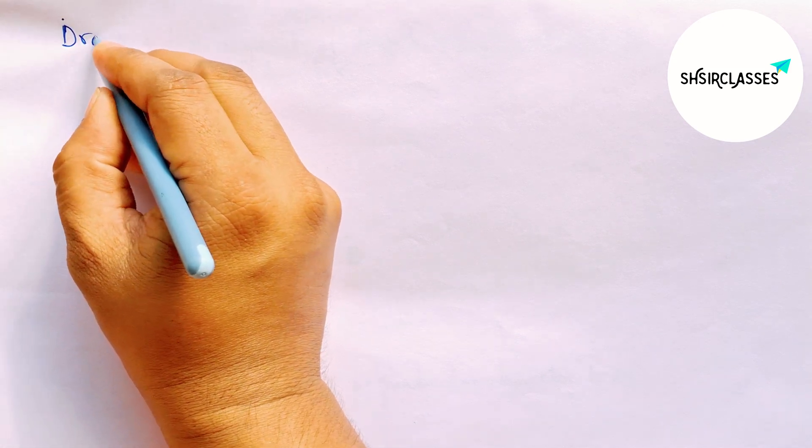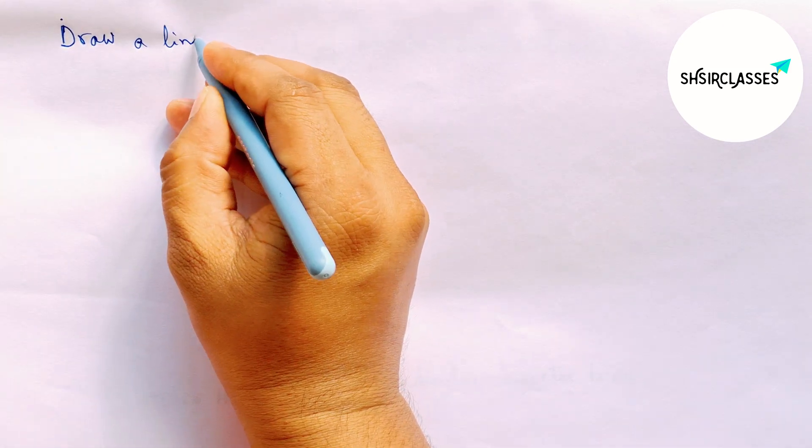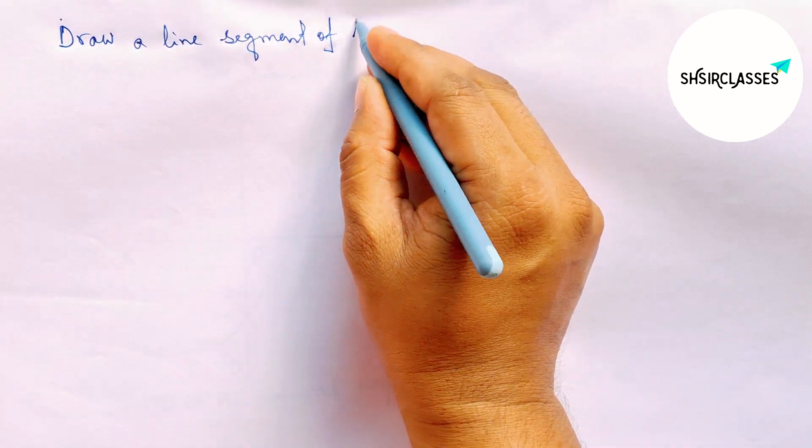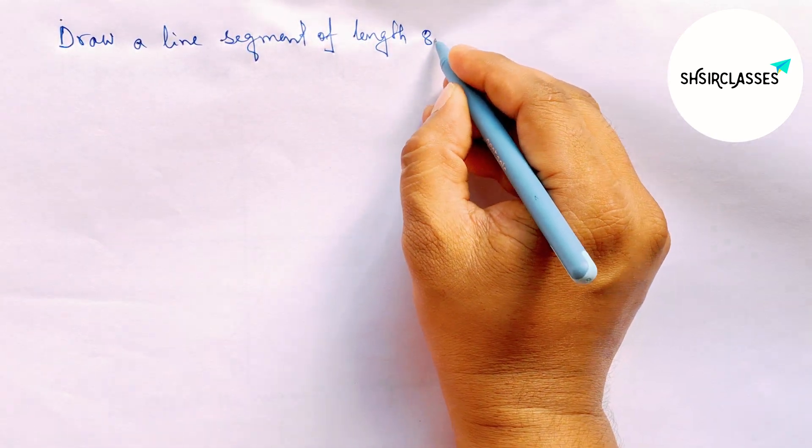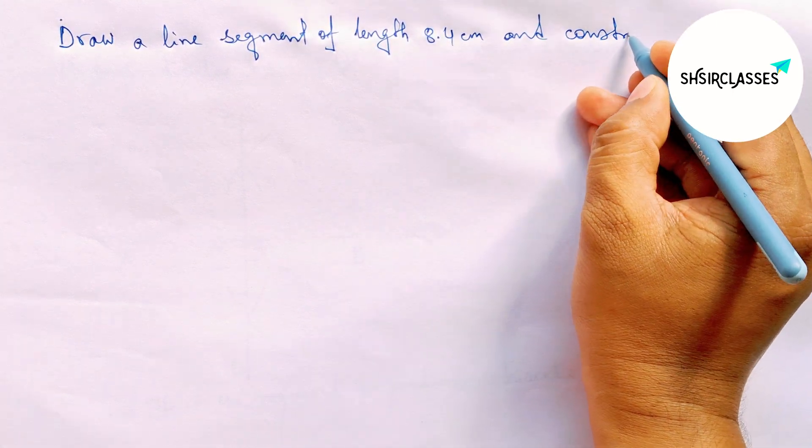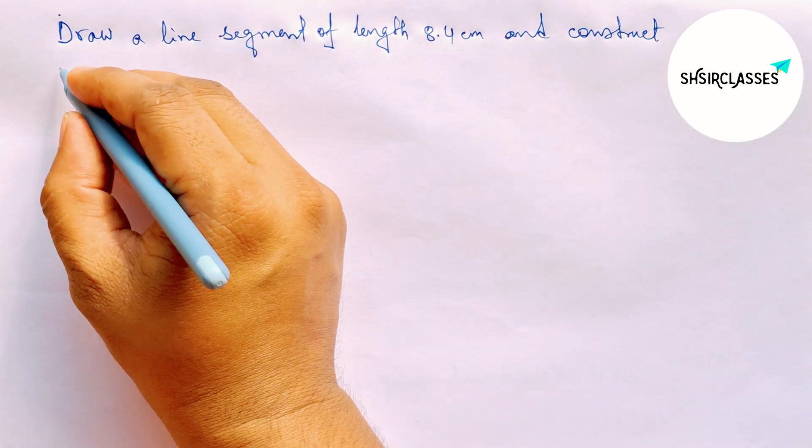Hi everyone, welcome to CSR classes. Today in this video, draw a line segment of length 8.4 cm and construct its perpendicular bisector to the given line in easy way.